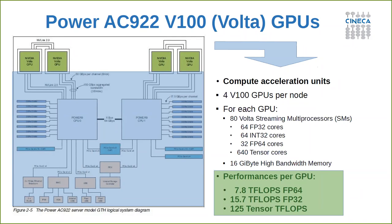The Volta GPUs in particular have 80 Volta streaming multiprocessors, with many cores devoted to double-precision floating-point operations, single-precision, and tensor cores — obtaining the performance I already showed. Each Volta GPU also has an internal high-bandwidth memory of 16 GB per GPU.